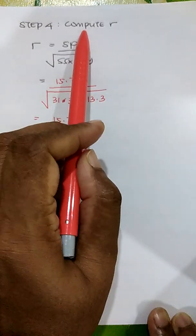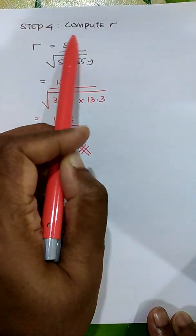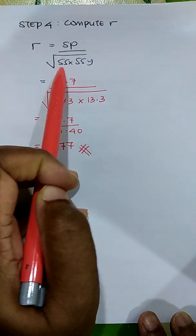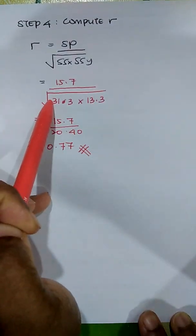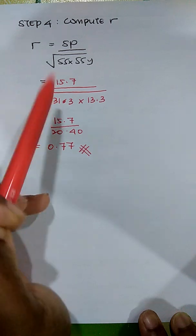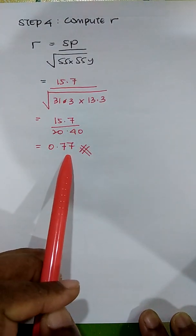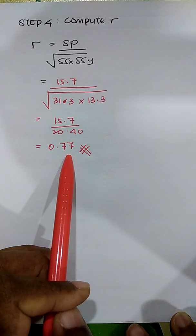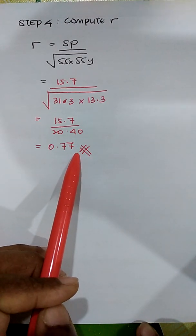The next step is to compute r. With SP = 15.7, SS(X) = 31.3, and SS(Y) = 13.3, plug these into the formula r = SP / √(SS(X) × SS(Y)). You get a Pearson correlation coefficient of r = 0.77.